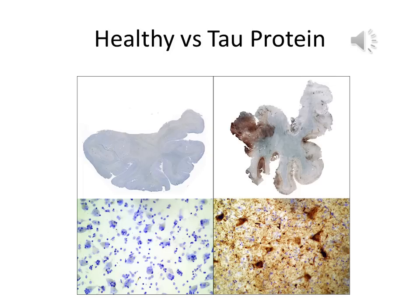In this slide, you can see an example of healthy tissue on the left compared to tissue with developing tau protein on the right.